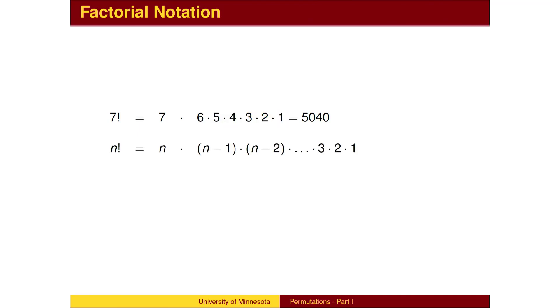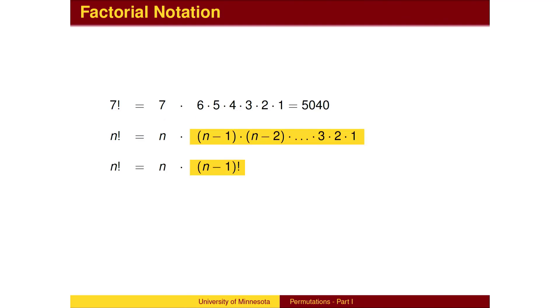For each positive integer n, n factorial is n multiplied by each positive integer less than n. Notice that after the n, the remainder is the product of all the integers from n minus one down to one, which is n minus one factorial. This fact is important for many of the simplifications performed in probability.